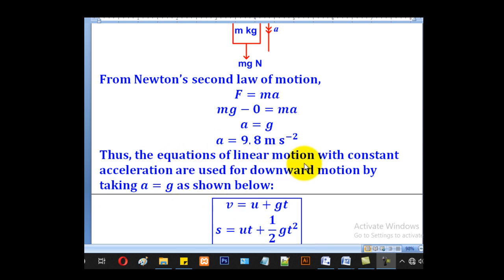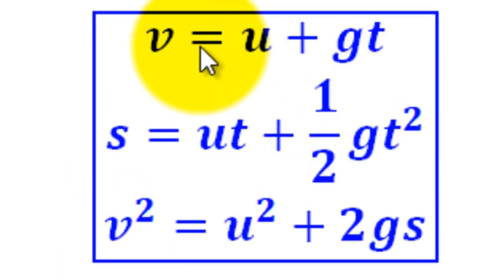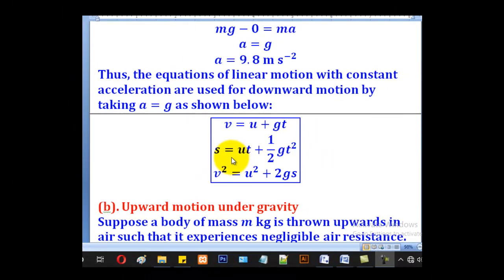The equations for linear motion with constant acceleration are used for downward motion by taking a equal to positive g, as shown below. The first equation, we shall replace a with g. Second equation, still replace a with g. Third equation, also replace a with g. Those will be the equations for downward motion.